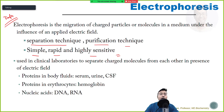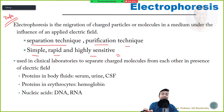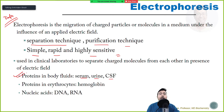Electrophoresis is broadly used on various samples. Number one, proteins in body fluid - for example serum protein, urinary protein, and CSF protein can all be separated using electrophoresis. Apart from that, various types of hemoglobins can be separated, including adult hemoglobin and fetal hemoglobin, by which we can diagnose thalassemia and other hemoglobinopathies.